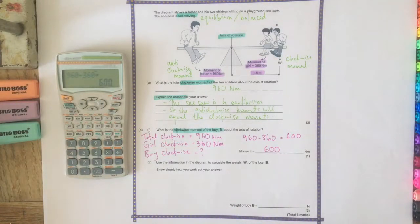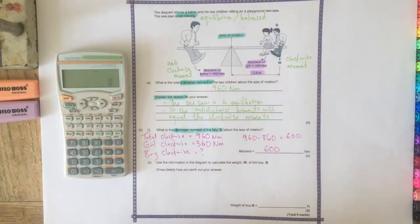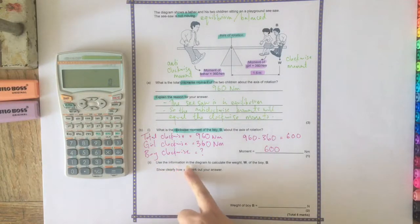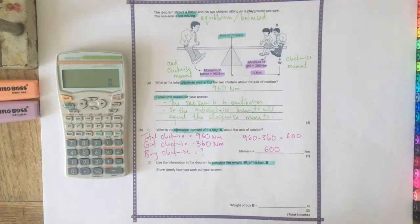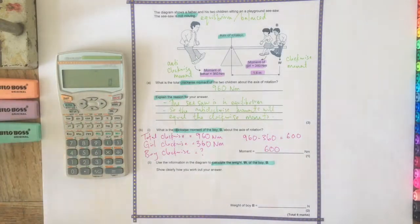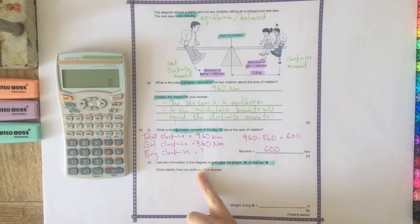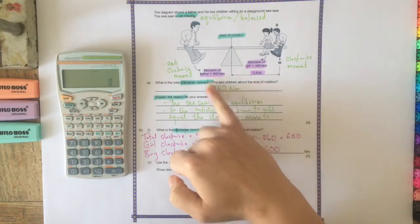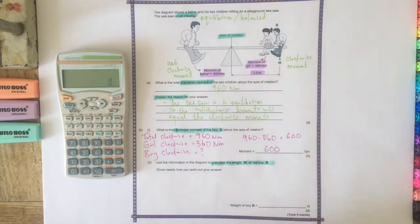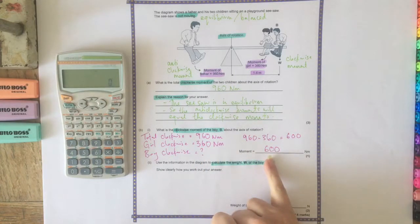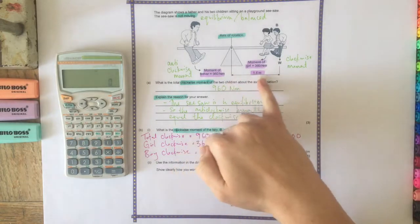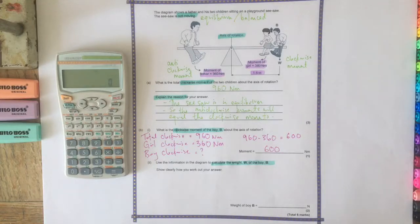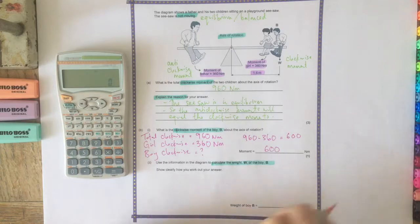Right, and then this is the bit that is the slightly more advanced part of the question. Use the information in the diagram to calculate the weight of the boy, show clearly how you worked out your answer. So information in the diagram - we've already used the kind of moments information, and we know the boy's moment, and we need to work out the weight. So there must be something else in the diagram that can help us. And the bit that we've not used so far is this distance that it has given us.